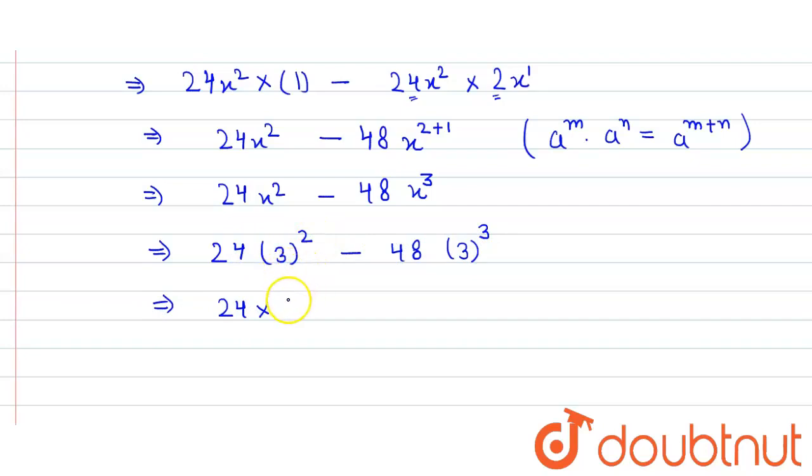So we get 24 × 9 minus 48 × 27, where 3² is 9 and 3³ is 27.